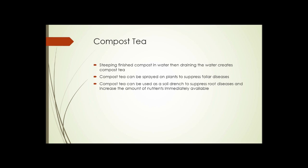Compost tea is made by steeping finished compost in water and then draining the water. It can be sprayed on plants to suppress foliar diseases. It can actually help reduce instances of foliar fungal diseases, black spot, powdery mildew, things like that. Compost tea can be used as a soil drench to help suppress fungal root diseases and increase the amount of nutrients in the soil that are immediately available without any further breaking down. Sort of a valuable product.